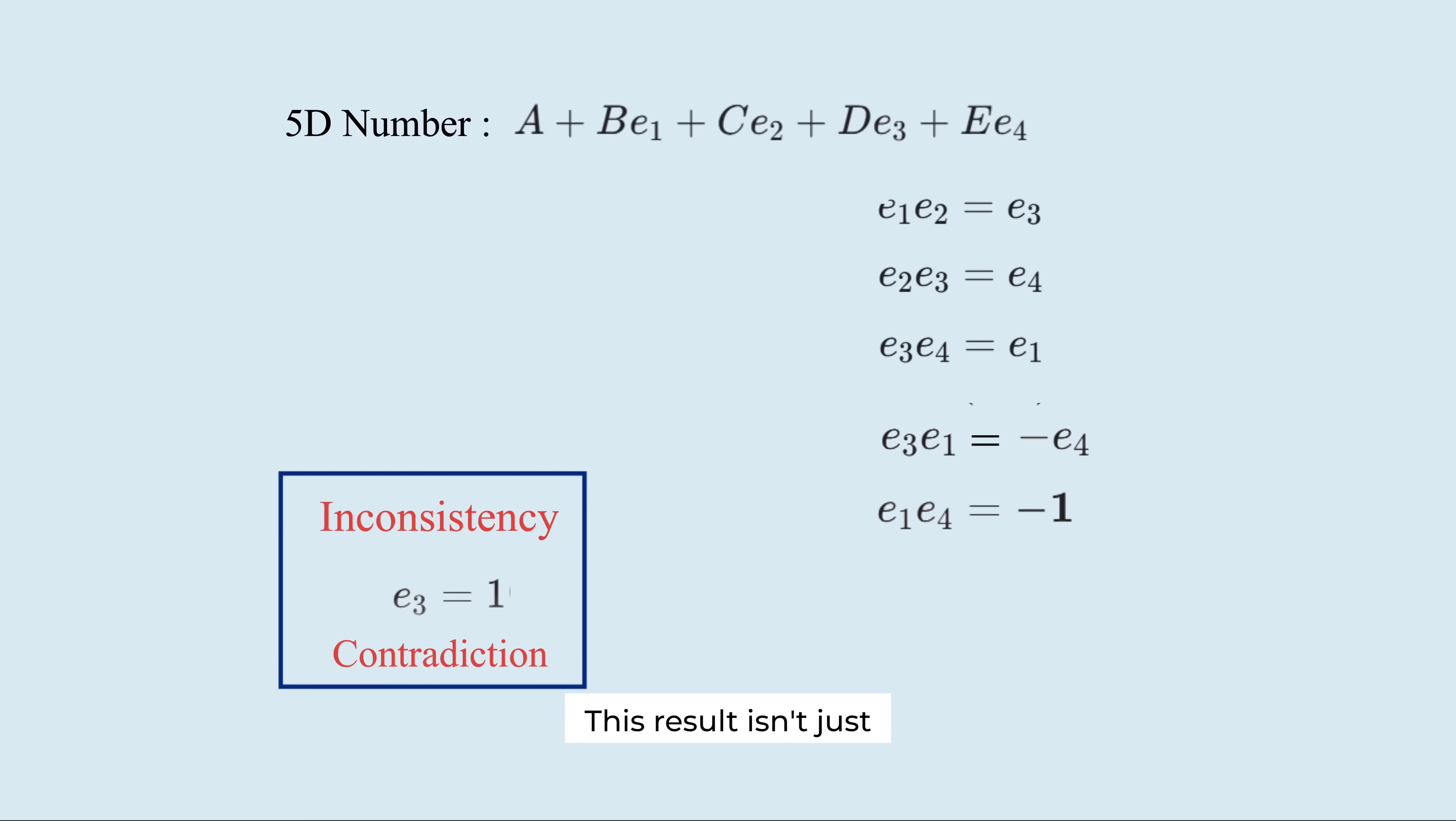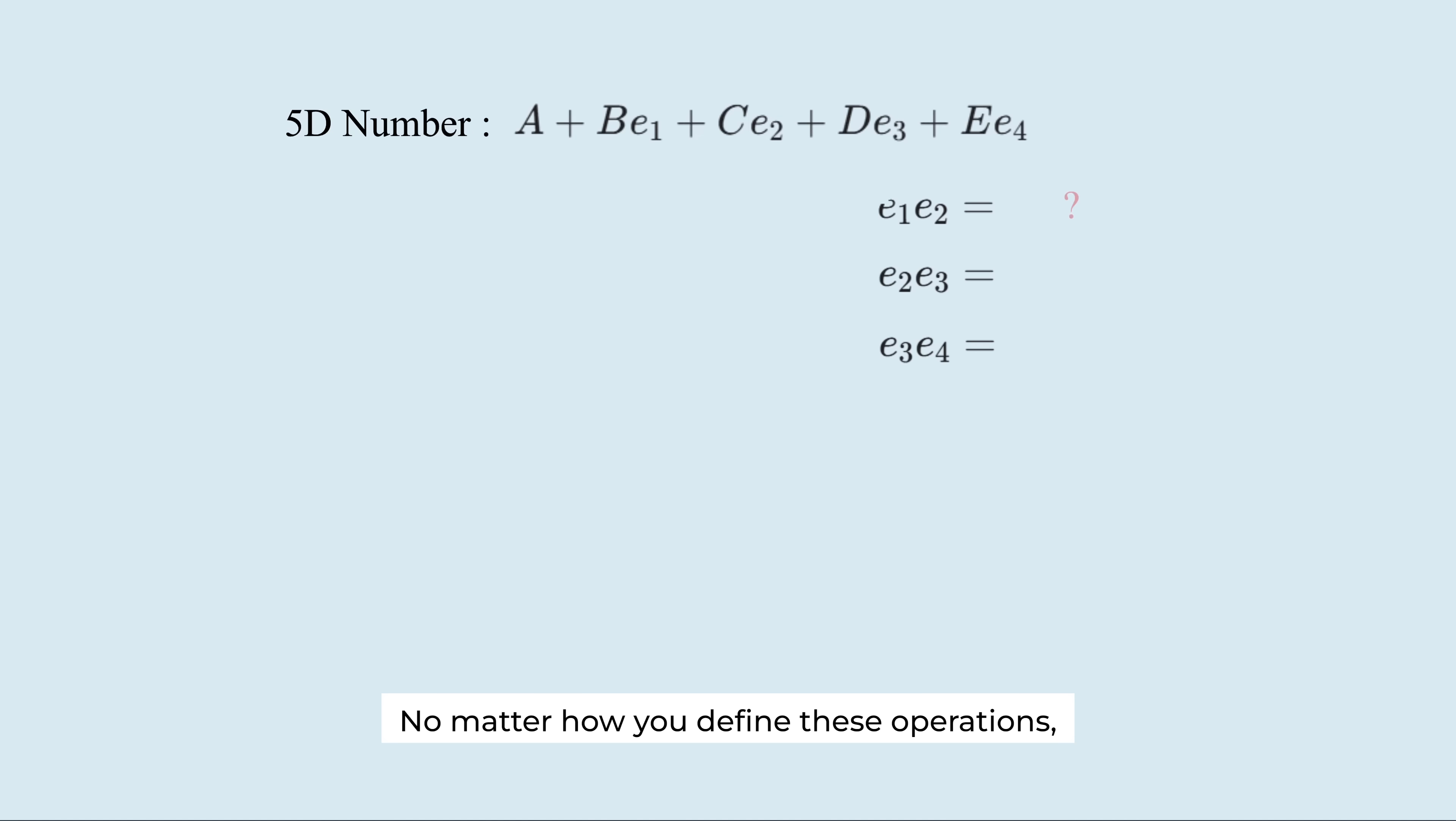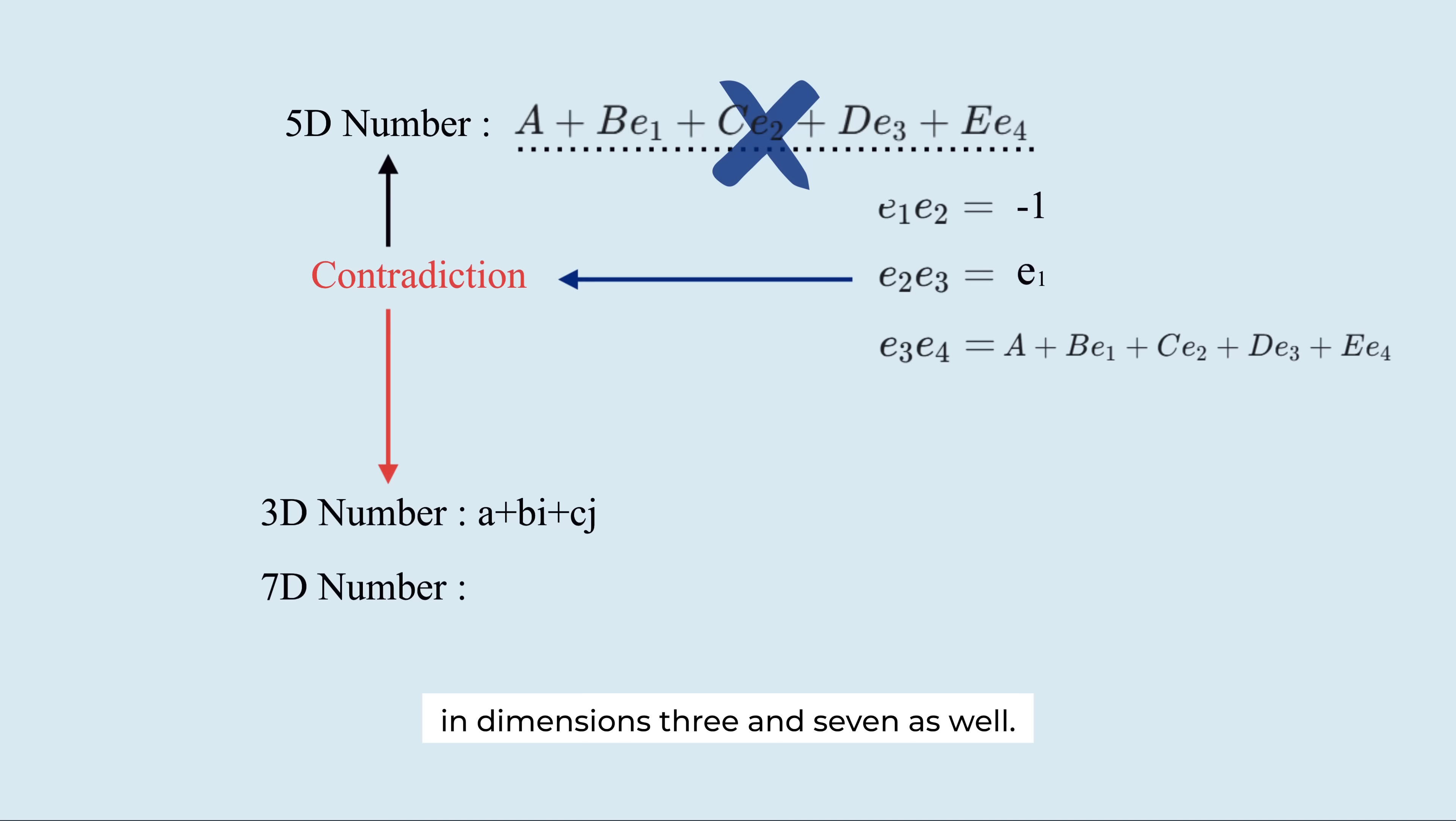This result is just because of this particular choice. No matter how you define these operations. Whether you try plus 1, minus 1, another imaginary unit, or the general form of 5D number, the contradiction will appear somewhere else. That's why a consistent number system can't exist in 5 dimensions. The same kind of contradictions happen in dimensions 3 and 7 as well.